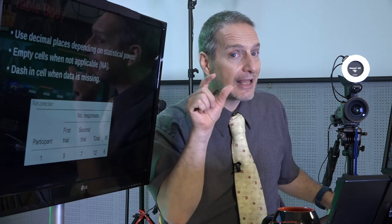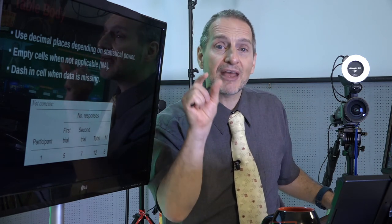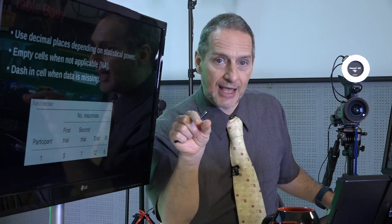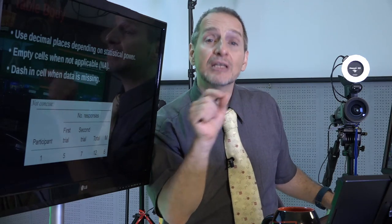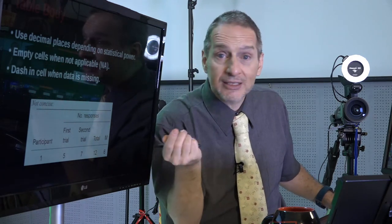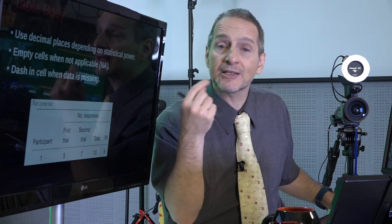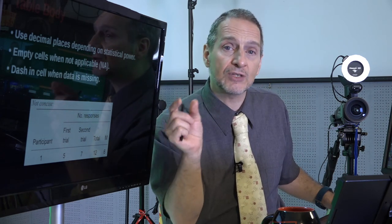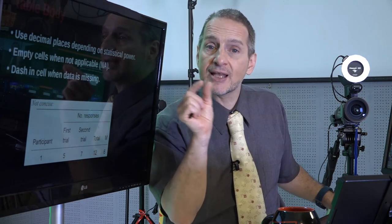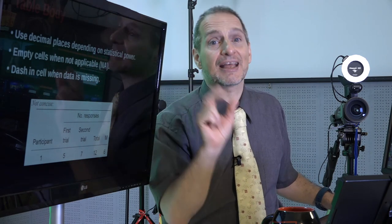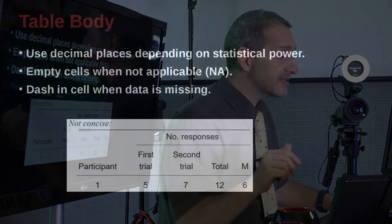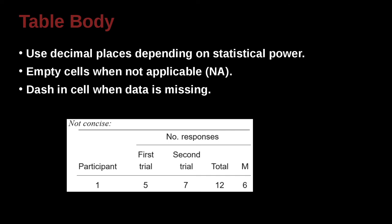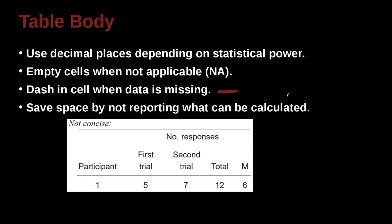In that case, that's not an empty cell. That's a cell where you should have data, but for some reason there is no data. And maybe because nobody did it, nobody answered it, nobody answered that question, nobody performed that activity. But that cell is not empty. It's just lacking data, missing data, basically. So if you're missing data, then you do not leave it empty. Rather, you go ahead and you use a dash inside that cell. And that symbolizes the data is missing.